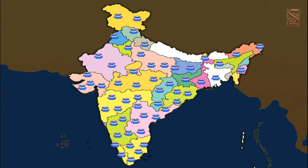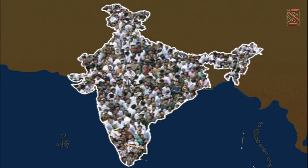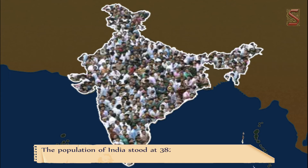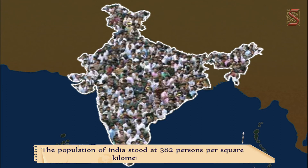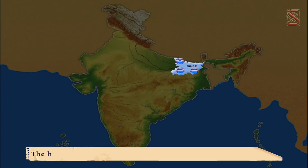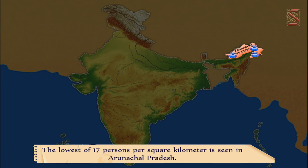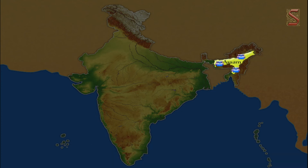One can get a better idea of population distribution by understanding population density. Population density is the number of persons per unit area. India is one of the most densely populated countries in the world, with 382 persons per square kilometer in 2011. The highest density is 1102 persons per square kilometer in Bihar, while the lowest of 17 persons per square kilometer is in Arunachal Pradesh.